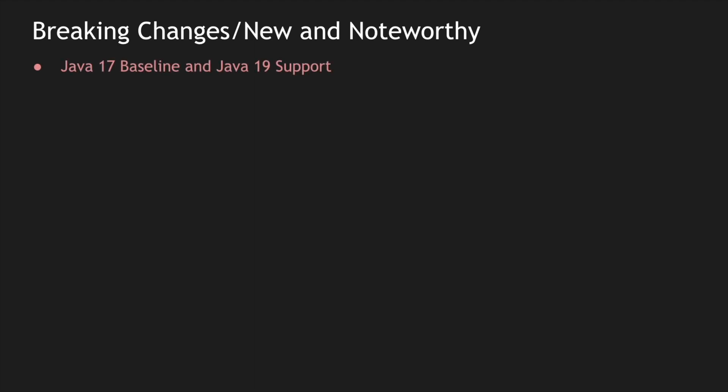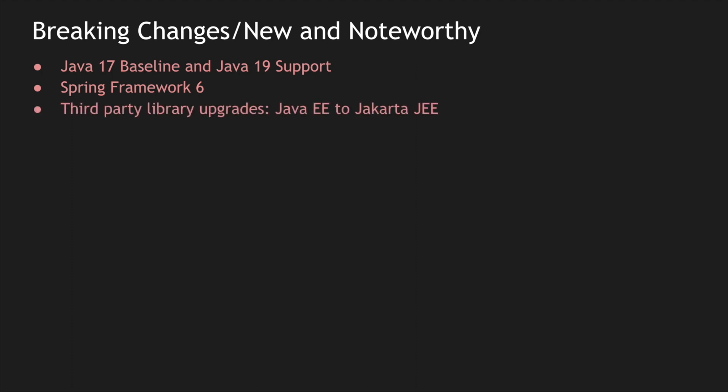Now let's look at some breaking changes. The first is the Java version — if you're using Java 11, you are forced to upgrade to Java 17 to use the latest Spring Boot. You'll have to upgrade your Java version, and that's a breaking change. In addition, Spring Framework 6 is again a breaking change because we need to upgrade to Spring version 6.